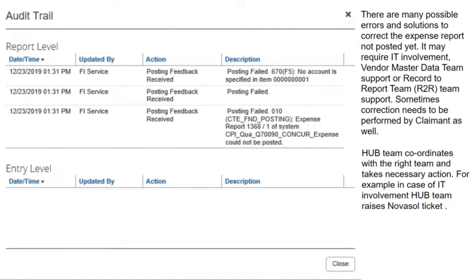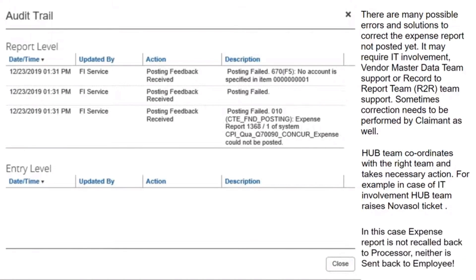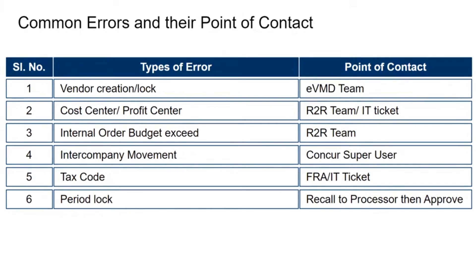For example, in case of IT involvement, the Hub team raises a NovaSol ticket. In this case, the expense report is not recalled back to the processor, neither is it sent back to the employee. The table given here indicates the common errors we get in the Concur Posting Run, and the point of contact for each of the errors. Kindly go through them.